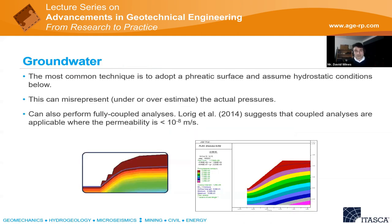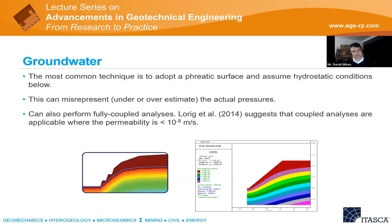Pore pressures are very important. Often for slope stability analysis we only have a phreatic surface and assume hydrostatic conditions below it — this can be okay but can misrepresent actual pressures. You can also have hydrogeological numerical analyses done and use those as inputs to stability analyses, or do it in a fully coupled manner in one model. Some previous workers have provided suggestions on permeability thresholds as an indication of whether coupled analyses should be done.